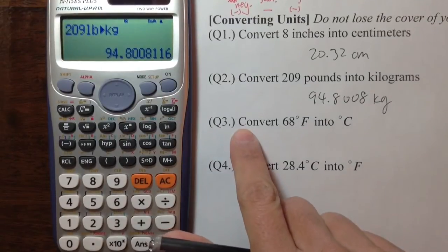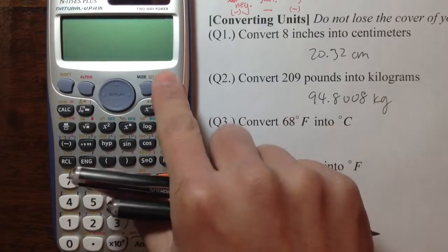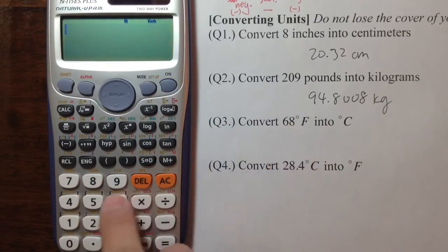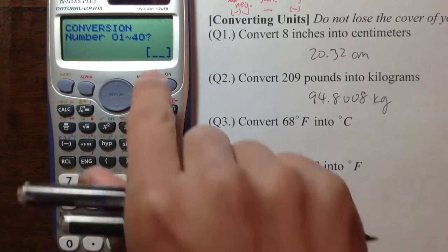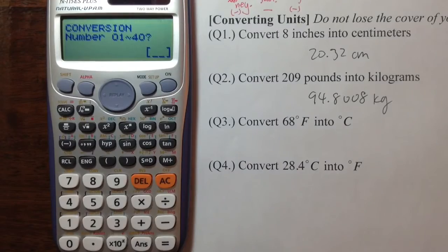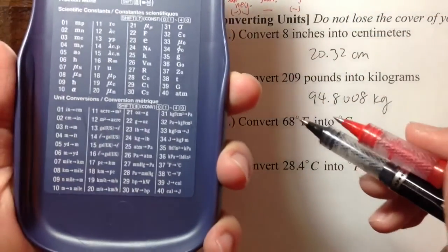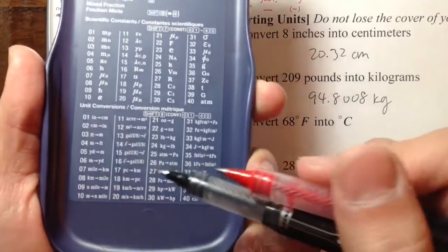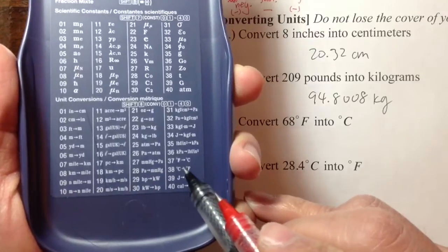Next one, I need to convert 68 degrees Fahrenheit into degrees Celsius. Same steps, press 68 first, and then shift and convert. And we are going to look for the conversion number. So look at the cover. Degree Fahrenheit to degrees Celsius, so F to C, which is the number 37.